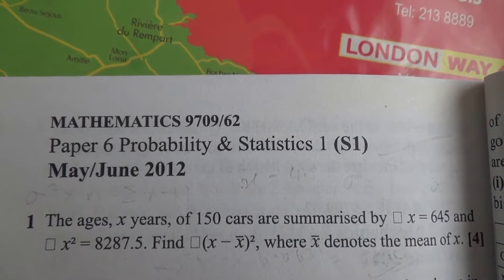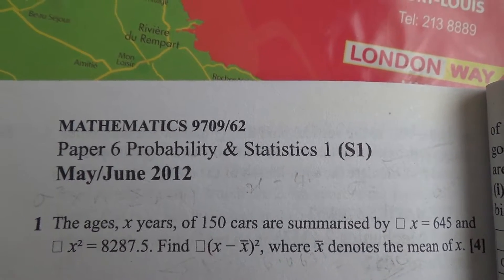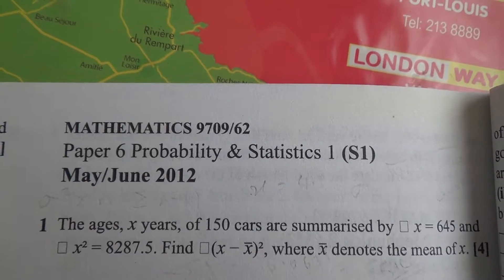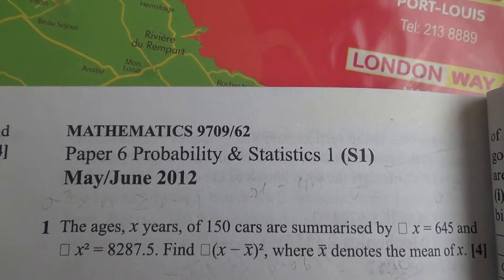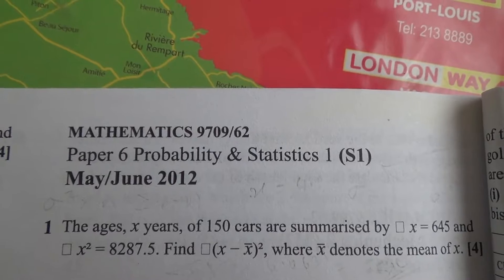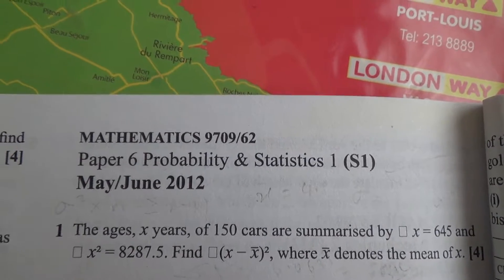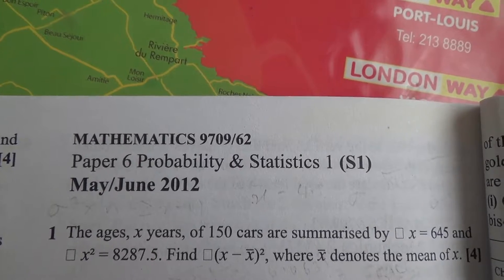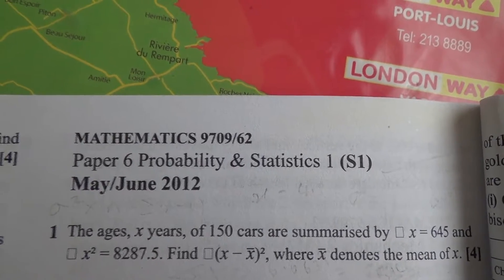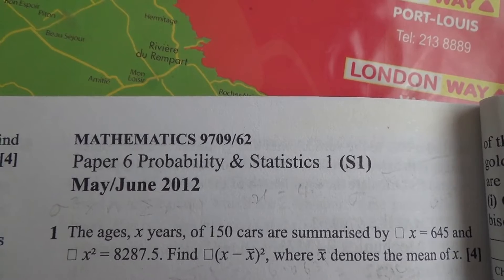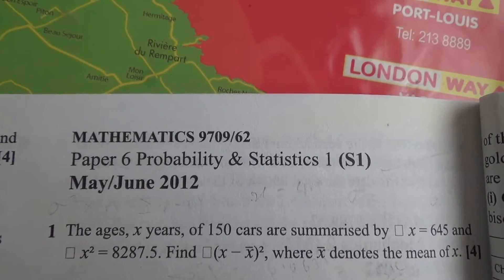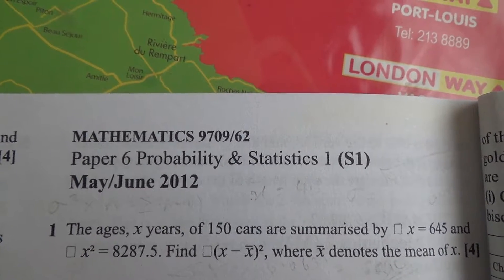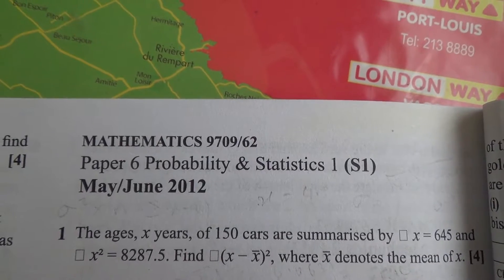Hi, question number 1 taken from June 2012, Advanced Level Maths HSC S1. The ages, x years, of 150 cars are summarized by the summation of x being 645 and summation of x squared is equal to 8287.5. We need to find the summation of x minus mean of x to the square where x denotes the mean of x, 4 marks. OK, so let's do it.